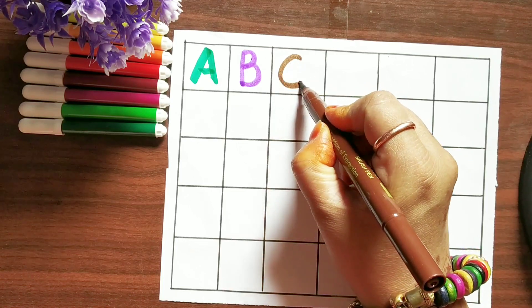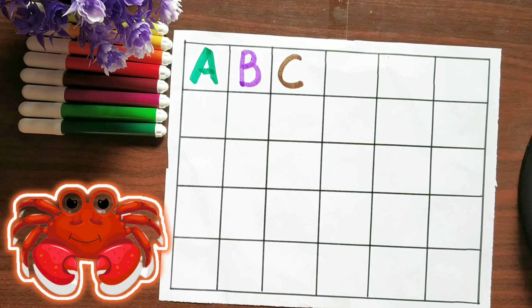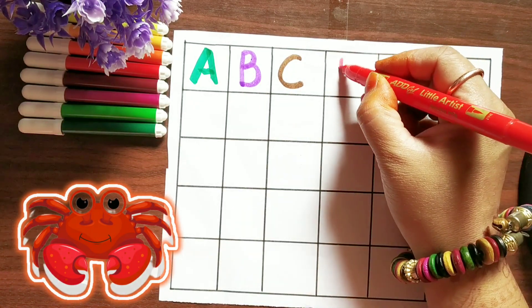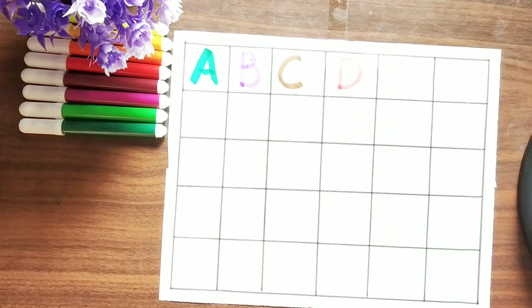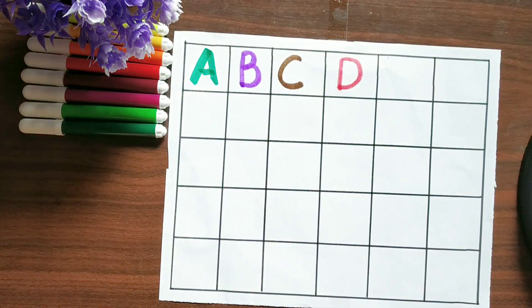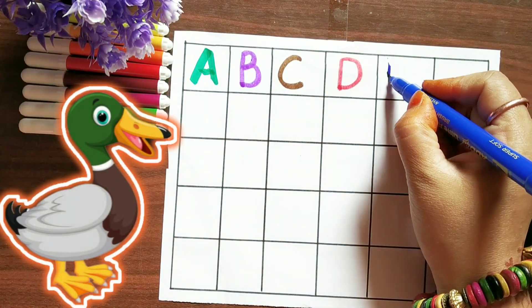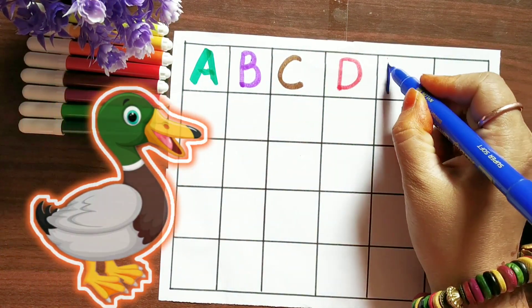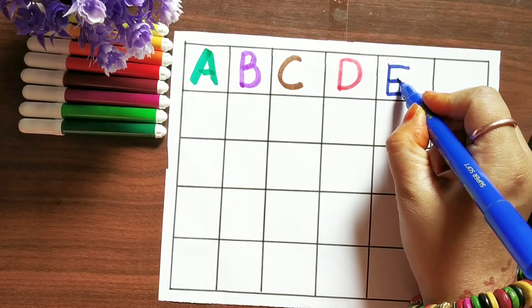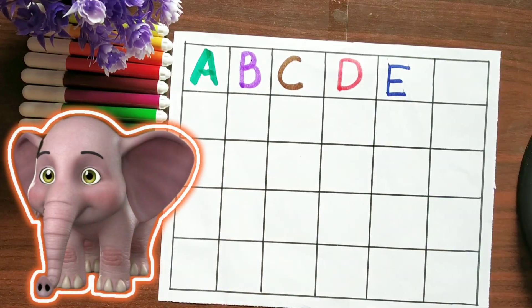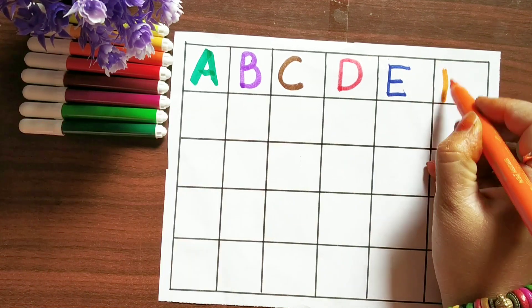Brown color. C, C for crab. Red, orange color. D, D for duck. Blue color.